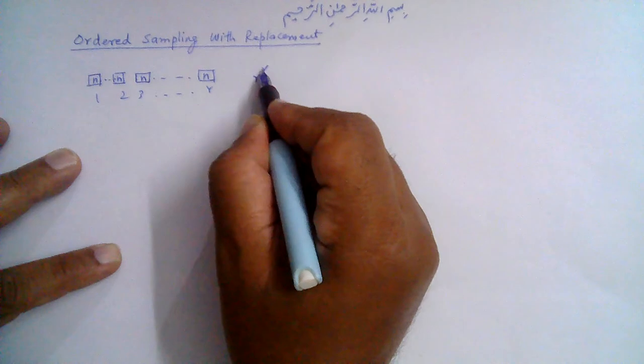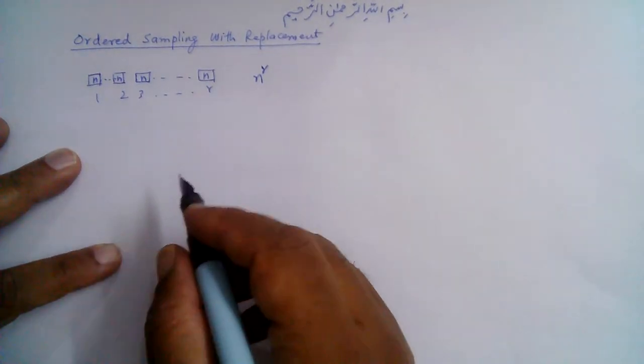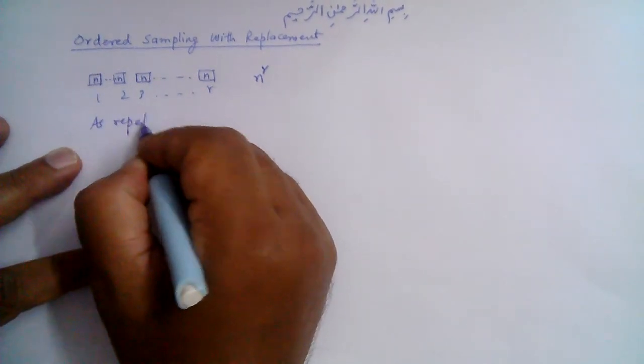So from the fundamental principle of counting, the total number of ways this can be chosen is n raised to the power r.